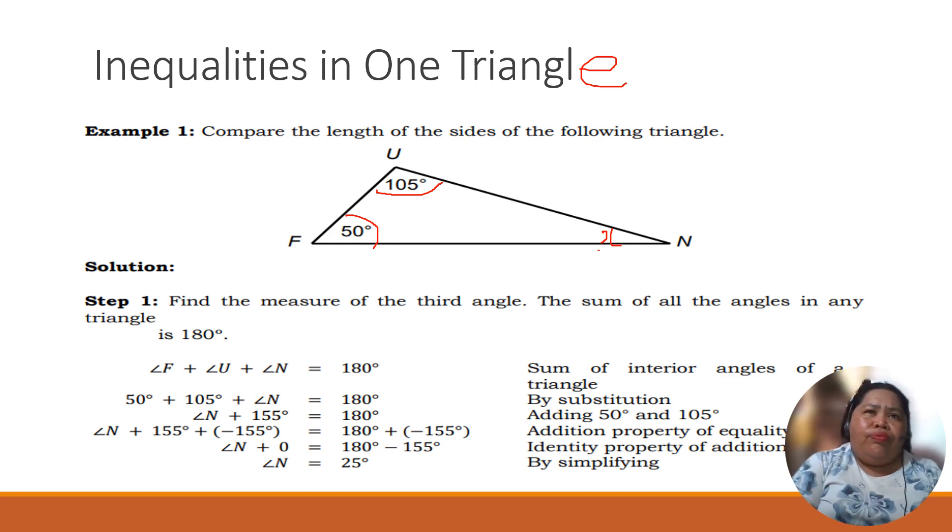So, angle F plus angle U plus angle N is equal to 180. And angle F is 50 plus 105 plus angle N equals 180. So therefore, angle N plus 155 degrees is 180. Then we subtract 155. That's why angle N is 25. Or angle N is equal to 25.